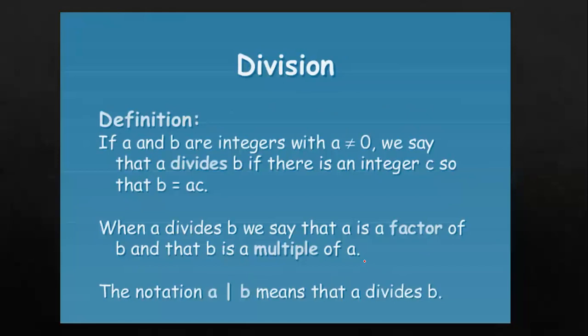Let's go towards the definition. If a and b are integers, when a is not equal to 0, we say that a divides b if there is an integer c such that b is equal to a times c. When a divides b, we say that a is a factor of b and that b is a multiple of a.